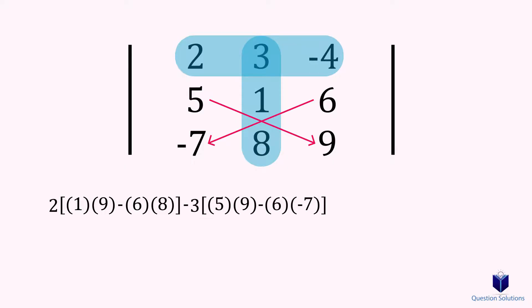Once again, we will cover the top row, and cover the rightmost column. Now, we are back to the positive sign again, and the intersecting number becomes negative 4. We will cross multiply, first 5 by 8, and then 1 by negative 7. Don't forget to subtract as before.